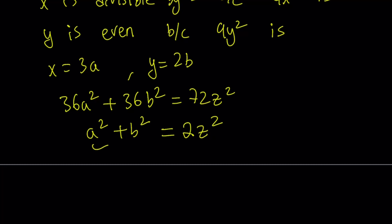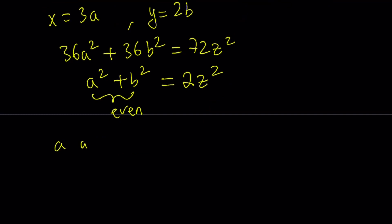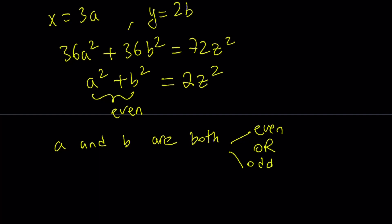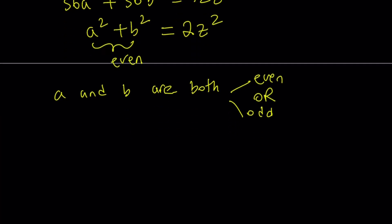Notice that a squared plus b squared is even. So either a and b are both even or both odd — in other words, a and b have the same parity. Since a and b are both even or both odd, their sum is always going to be even, which means (a+b)/2 and (a−b)/2 are integers.